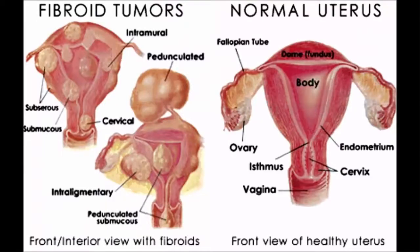In this diagram, you can see what a normal uterus would look like in comparison to a uterus that is filled with many different types of fibroids. The best way to approach healing yourself is a natural way through diet, herbs, and a change in eating lifestyle.